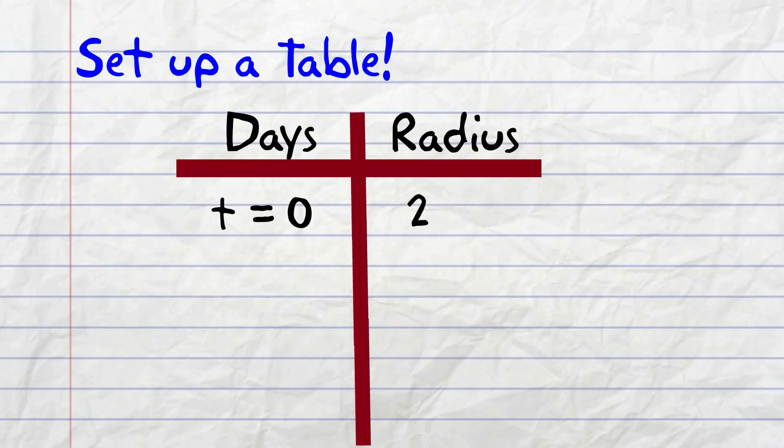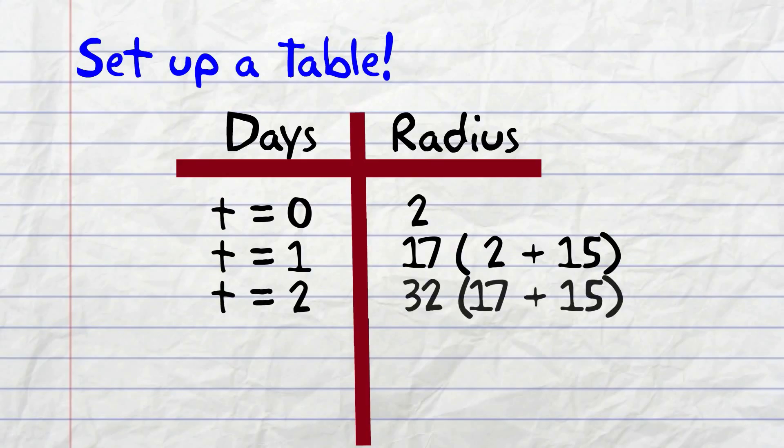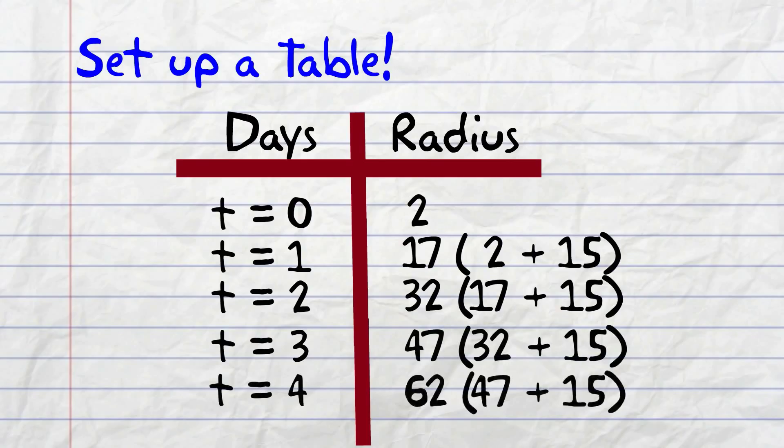Since the radius increases 15 miles per day, when t equals 1, the radius is now 17. When t equals 2, the radius is 32. When t equals 3, the radius is 47. And when t equals 4, the radius is 62 miles.